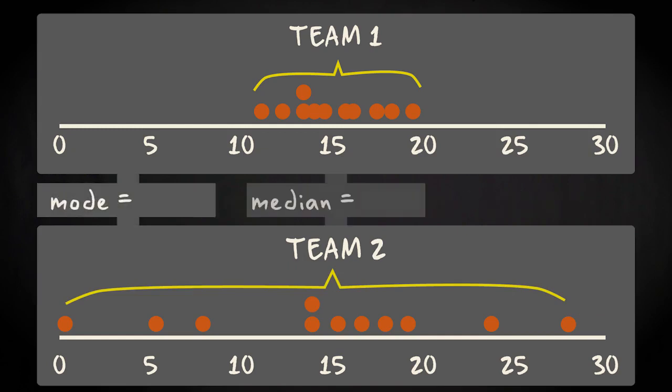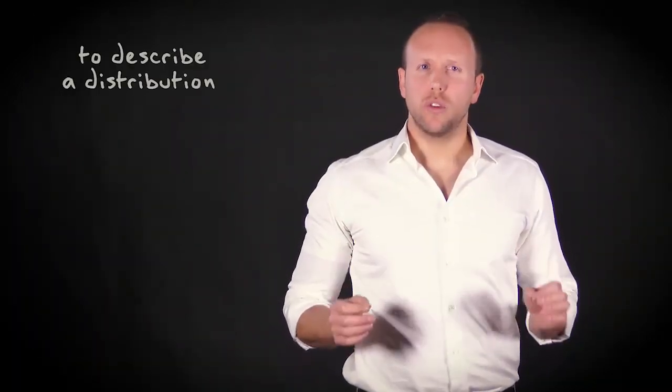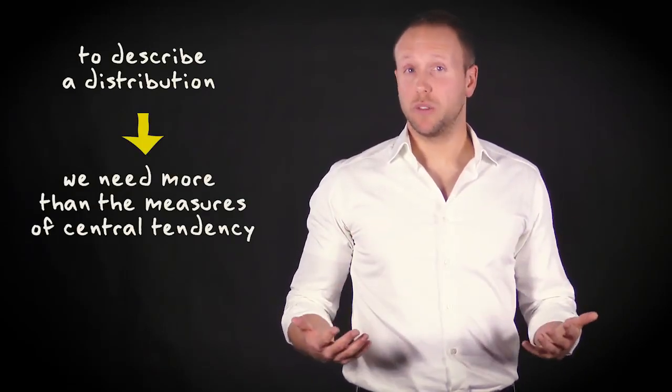However, mode, median and mean are the same. In both distributions, the mode equals 14.1, and median and mean equal 15. This indicates that in order to adequately describe a distribution, we need more information than the measures of central tendency.